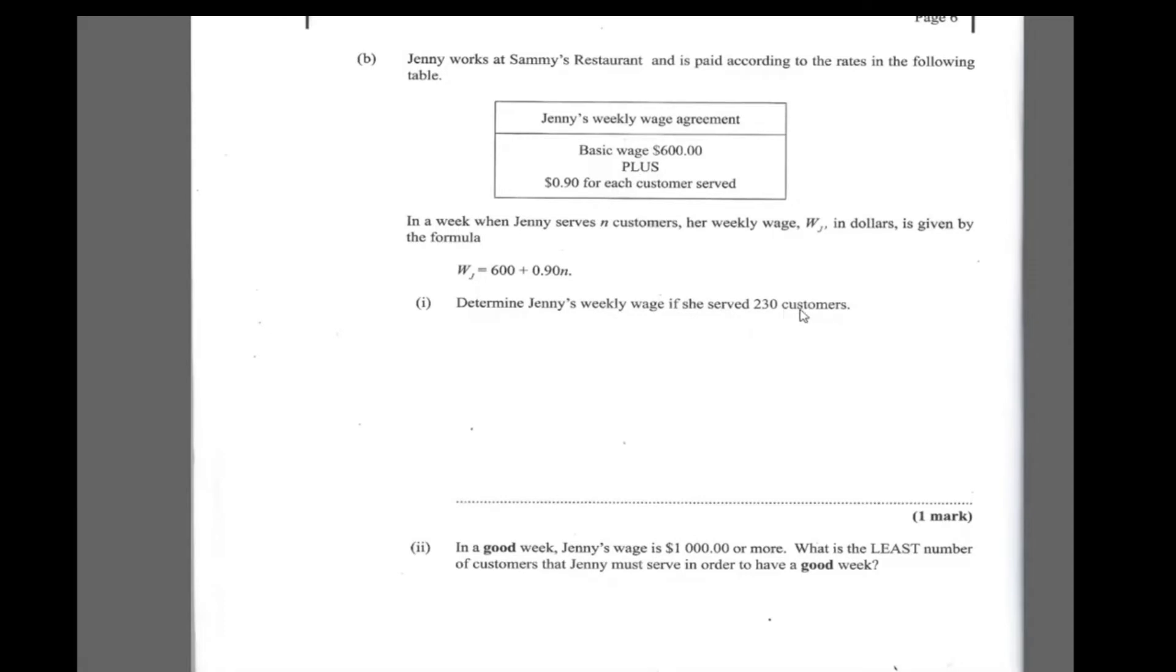So ignoring that fact now, let's do the question. It says determine Jenny's weekly wage if she served 230 customers. So we're going to substitute N as 230. So WJ is equal to $600 plus 0.9 times 230. 0.9 times 230, this is a good pay if it's US dollars, very good pay for the week. And what this works out to be is equal to $600 plus 0.9 times 230, that is $807. So that's $807, that's what you actually make if you serve 230 people.